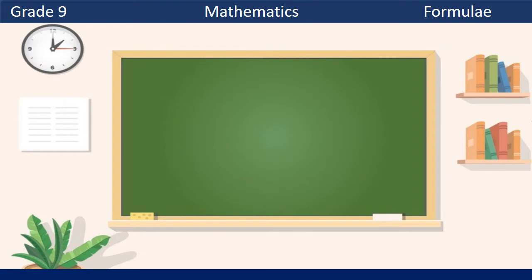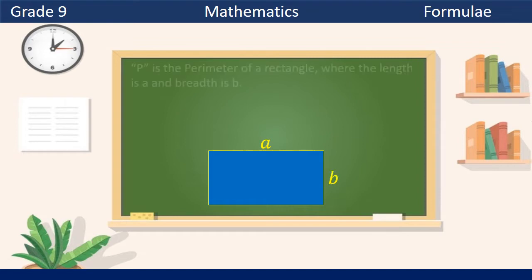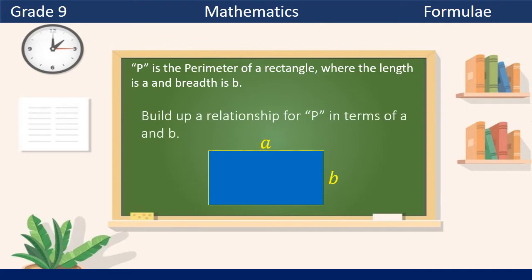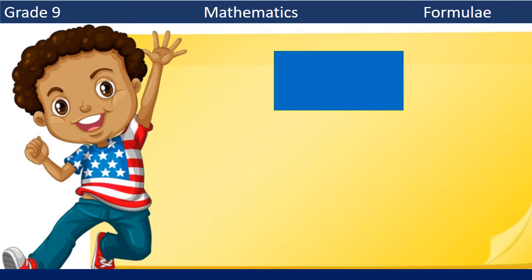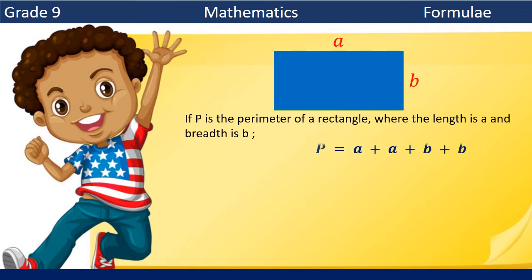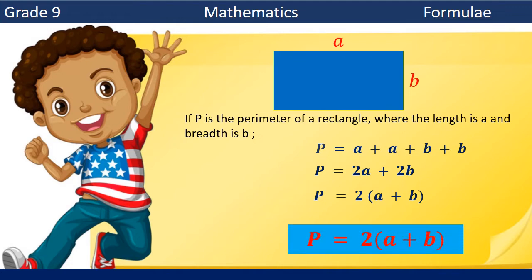Let's do a small activity to get an idea about formula. You can see a rectangle with length and breadth of a and b respectively. If the perimeter of the rectangle is p, let's build up a relationship for p in terms of a and b. In a rectangle, perimeter is the length around it. So p equals a plus a plus b plus b, which gives p equals 2a plus 2b, and therefore p equals 2 times (a plus b).